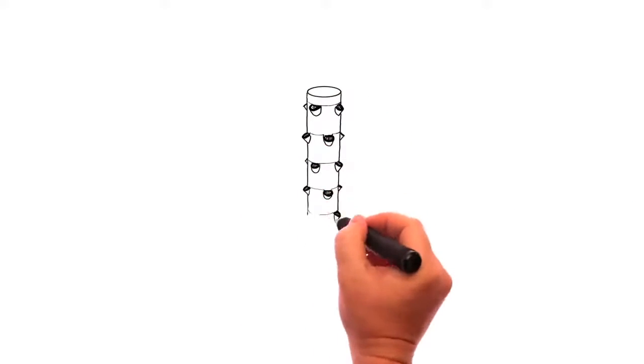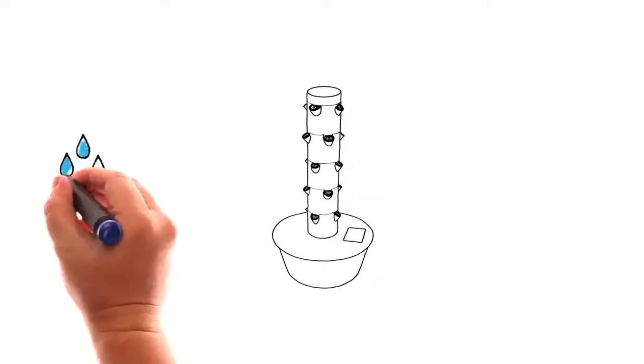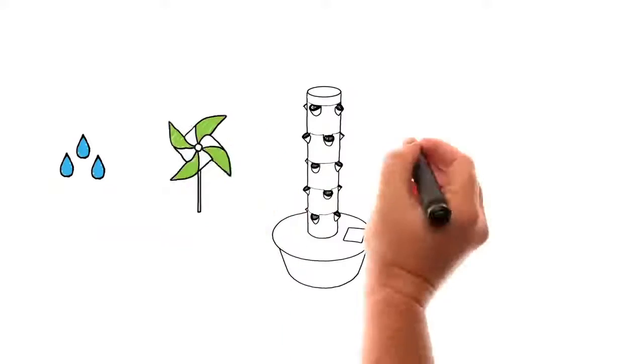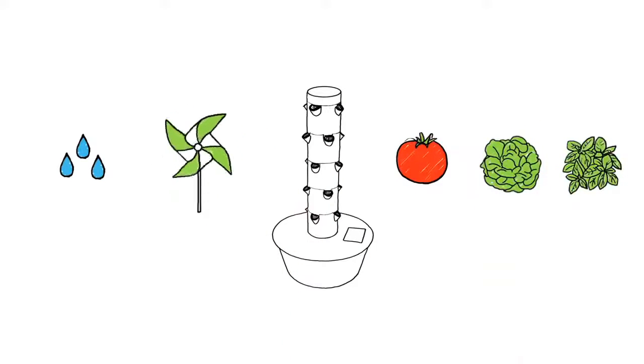Tower Garden's state-of-the-art aeroponic vertical garden system uses both water and air to produce more colorful, better-tasting, and incredibly nutritious fruits, vegetables, and herbs.